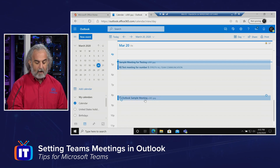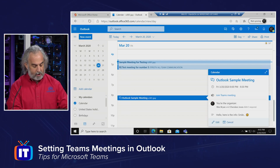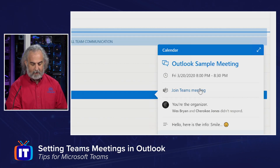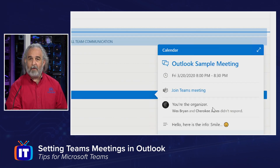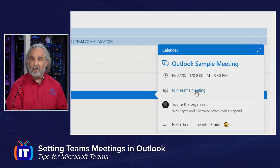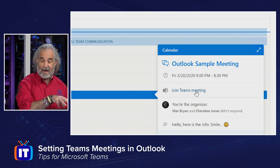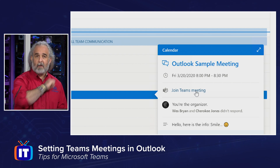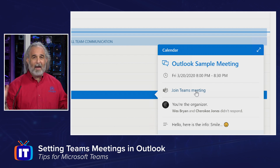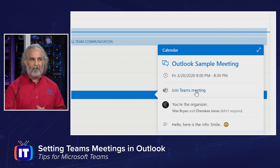Let's open up that Outlook sample meeting. And sure enough, what do we see right there? Join Teams meeting. I'm the organizer — whoever else is there may or may not have responded. But I've got a link that lets me join that meeting in Teams directly from Outlook, from my calendar. And I never went into Teams to set this meeting up. I did it all from Outlook.